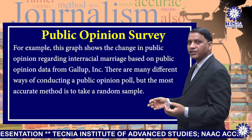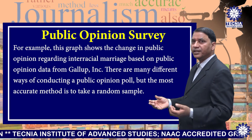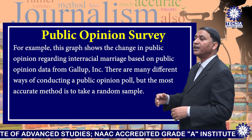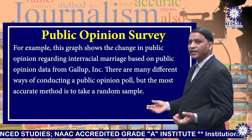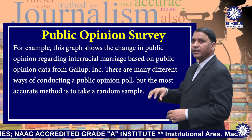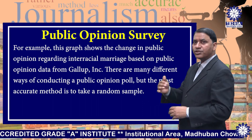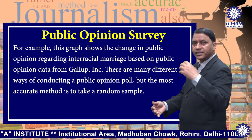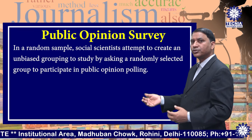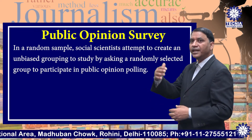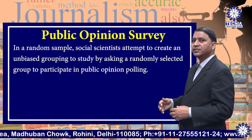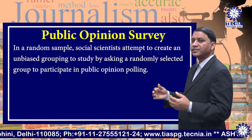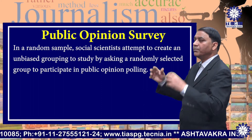For example, this graph shows the change in public opinion regarding interracial marriage based on public opinion data from Gallup Inc. There are many different ways of conducting a public opinion poll, but the most accurate method is to take a random sample. In a random sample, social scientists attempt to create an unbiased grouping to study by asking a randomly selected group who participated in public opinion polling.